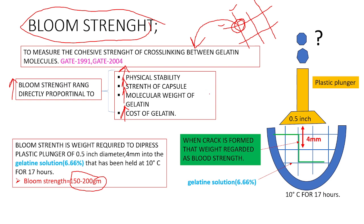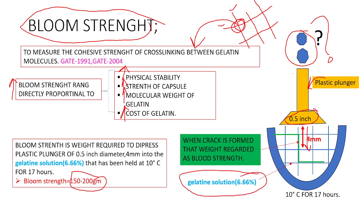Bloom strength is defined as how much grams of weight is required to depress a plastic plunger having 0.5 inch diameter, inserted to 4 millimeter depth into a gelatin solution. The concentration of the gelatin solution is 6.66 percent, and that gelatin solution is held at 10 degrees centigrade for 17 hours.